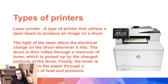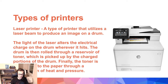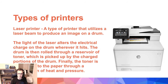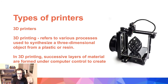Laser jet printers are different from inkjet. They're a type of printer that utilizes a laser beam to produce an image on a drum, and then seals it into the paper with heat. The light of the laser alters the electrical charge on the drum wherever it hits. The drum is then rolled through a reservoir of toner, which is picked up by the charged portion of the drum. Finally, the toner is transferred to the paper through a combination of heat and pressure — that's why when you pick up a page from a laser jet printer, it's very warm. There's a cool video in the description showing exactly how the laser jet printing process works.